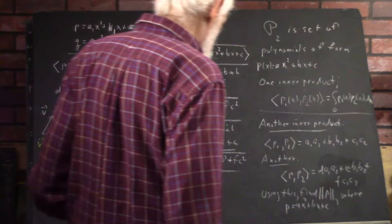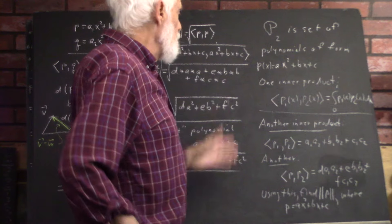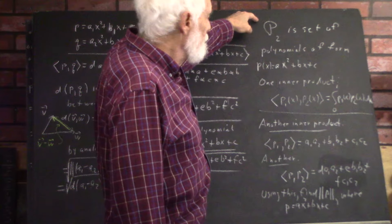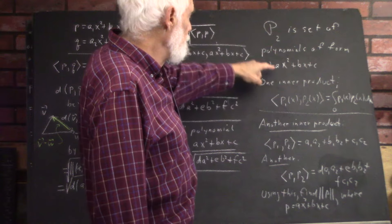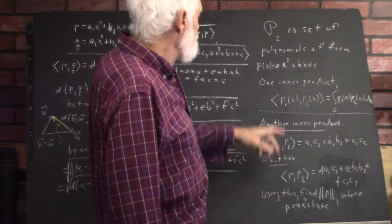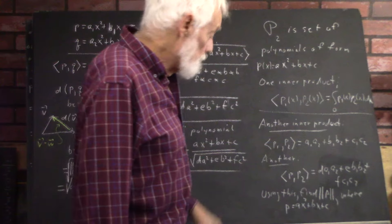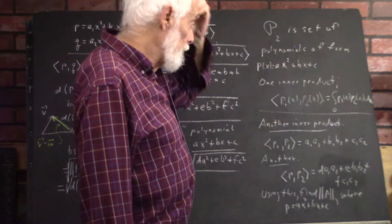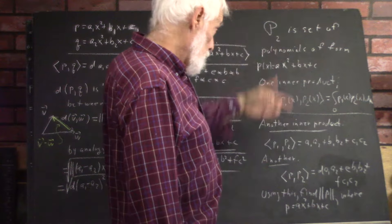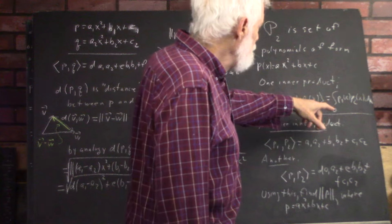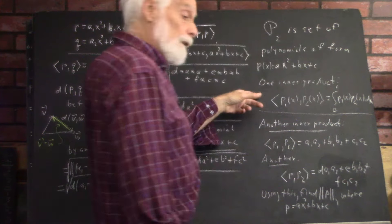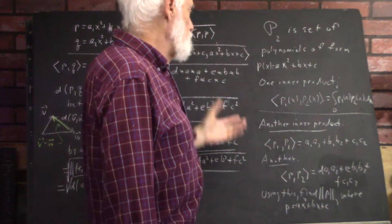We want to see a little more about inner product spaces. Another example of an inner product on P2, which is the set of all quadratic polynomials of the form ax squared plus bx plus c. One inner product we've already looked at is where we take the inner product of P1 with P2 by integrating the product of the polynomials from 0 to 1.